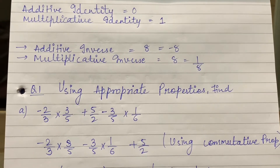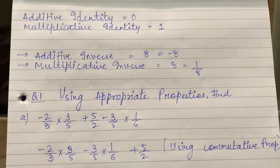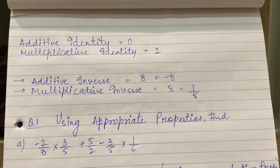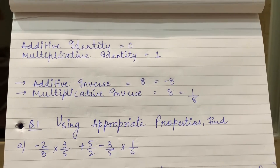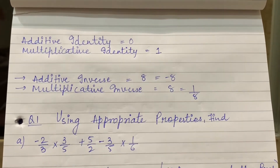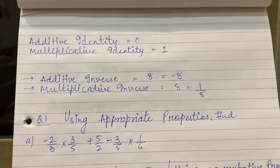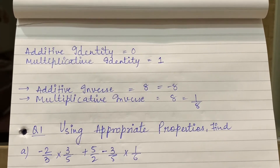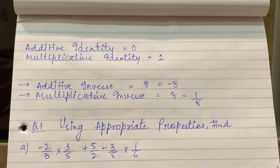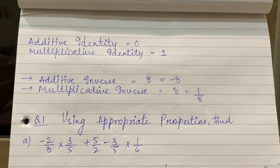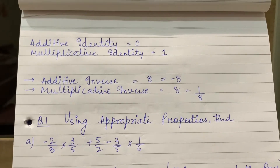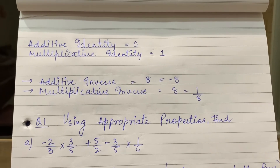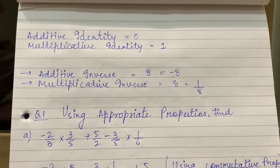Now, multiplicative identity — which number will I multiply so that the number remains as it is? If I multiply 2 by 1, then it will remain 2. But from additive identity, if I add 0 into 2, then my answer is 0, then my identity is changed.